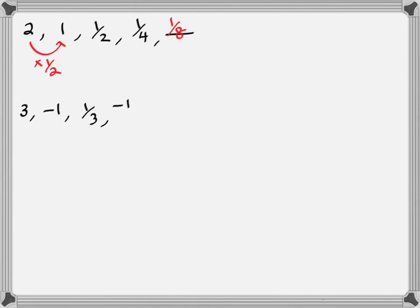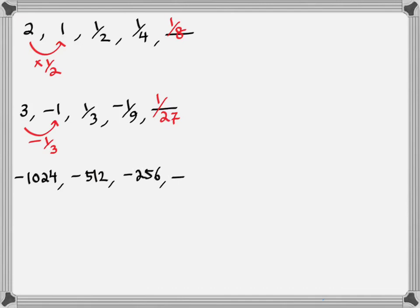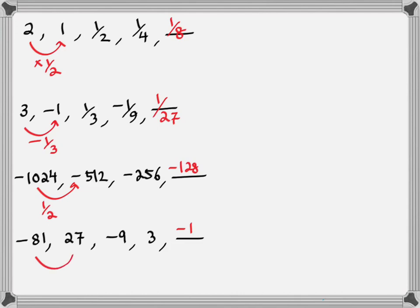Similarly, the series 3, -1, one-third, -1 over 9 — the sign changes, so the common ratio is negative. The same sign observations from the first page remain throughout. What is different in these series is that since the common ratio is a fraction between -1 and 1, instead of the numbers increasing in size and swelling up, they are diminishing — they are decreasing in size. Therefore, whenever the common ratio is a fraction between -1 and 1, the numbers decrease in size. Alternatively, if the common ratio is greater than 1 or less than -1, the terms will increase in size.